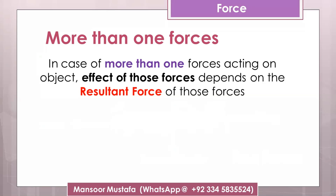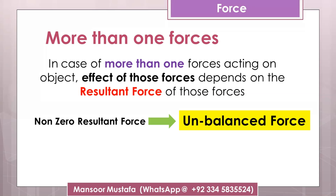Moving back to the lecture - we are discussing that if more than one force is acting, to find the effect of those forces, we find the resultant of those forces. Now based on the resultant, we categorize multiple forces into two groups. If you find the resultant of two or more forces and you are getting a non-zero value - whether positive or negative, since force is a vector and sign represents direction - those forces are called unbalanced forces.